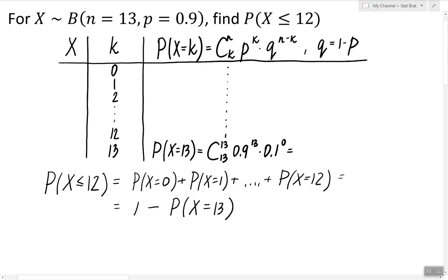The probability of X being equal to 13 is equal to 0.254186583, and therefore to answer the question